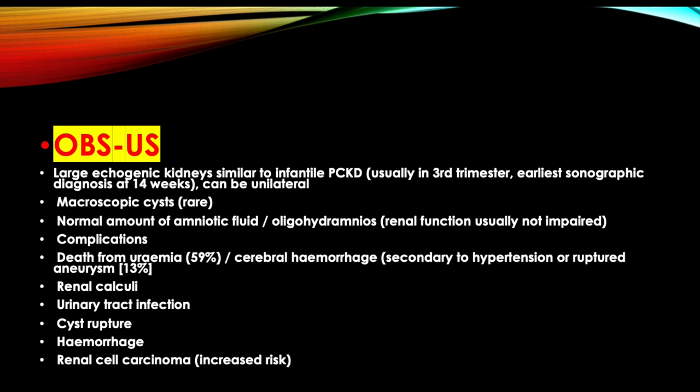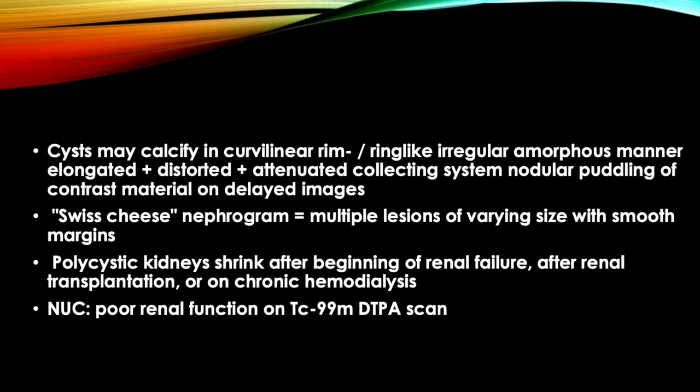Complications include death from uremia, cerebral hemorrhage secondary to hypertension or ruptured aneurysm, renal calculi, UTI, cyst rupture, hemorrhage, and these patients are at an increased risk of renal cell carcinoma. Cysts may calcify in a curvilinear rim. Polycystic kidneys shrink after beginning of renal failure, after renal transplant, or on chronic hemodialysis.